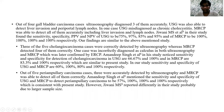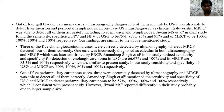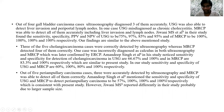Three out of five cholangiocarcinoma cases were correctly diagnosed by ultrasonography, whereas MRCP detected four of them correctly. One case was incorrectly diagnosed as choledocholithiasis on both USG and MRCP, which was later confirmed by ERCP. Amandev Singh et al. noted sensitivity and specificity for detection of cholangiocarcinoma in USG at 66.67% and 100% respectively, which was similar to our present study. In our study, sensitivity and specificity of USG and MRCP were 60%, 100%, 80%, and 100% respectively. Out of five periampullary carcinoma cases, three were accurately detected by ultrasonography and MRCP detected all of them correctly. Amandev Singh et al. mentioned sensitivity and specificity of USG and MRCP to detect periampullary carcinoma to be 57%, 100%, 100%, and 100% respectively, consistent with the present study.